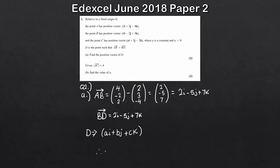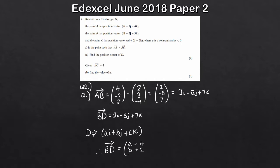So doing that — B to D — that's simply going to be A minus 4 for the i component, then B minus minus 2, so that's plus 2 for the j component, and then finally C minus 3 for the K component. We know this equals 2i minus 5j plus 7k, so the i component gives us A minus 4 equals 2, the j component gives B plus 2 equals minus 5, and the k component gives C minus 3 equals 7.